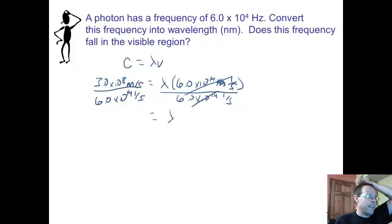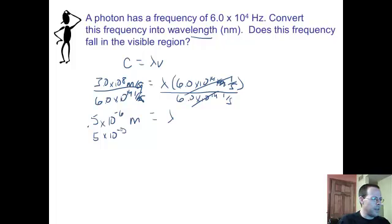What happens if we divide anything by itself? It goes away, so seconds goes away because they're both in the denominator. We're left with meters, which makes sense because we want a wavelength. 3 divided by 6 is 0.5, and 8 minus 14 times 10 to the negative 6th. We might change that into 5 times 10 to the negative 5th. Notice this is still meters, but we want nanometers.